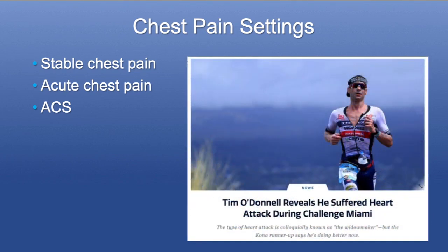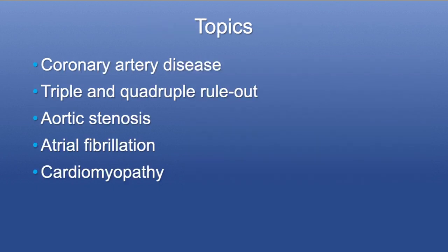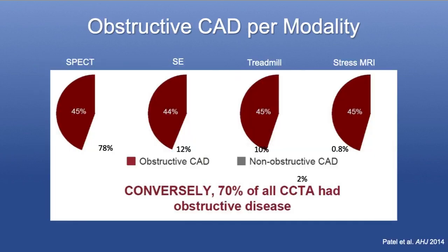Not only adult male patients have an MI or pain from coronary disease. Female patients have it and are often under-evaluated, and we tend to assume the causes of chest pain are from a different reason. Younger patients can also have pain from coronary artery disease. And also athletes — we know Tim O'Donnell had an MI while doing an Ironman. The relationship between CAD and endurance sports is now being re-evaluated. We'll be covering coronary artery disease, the importance of spectral in triple and quadruple rule-out, aortic stenosis, atrial fibrillation, and cardiomyopathy.